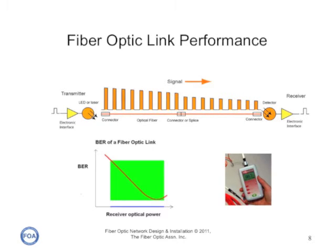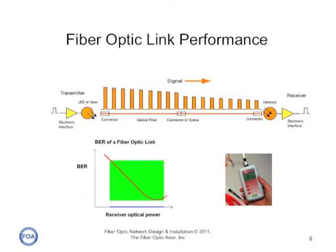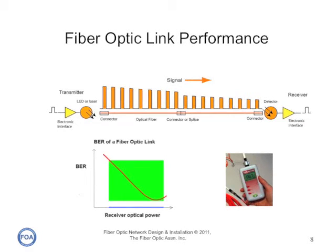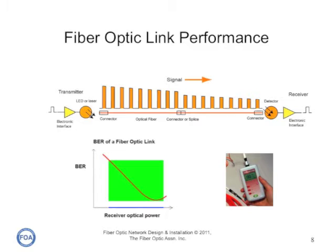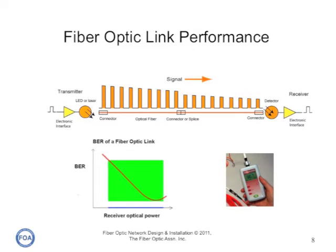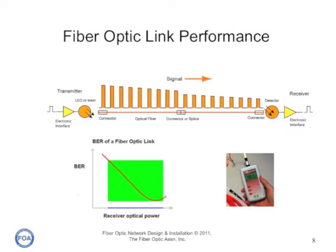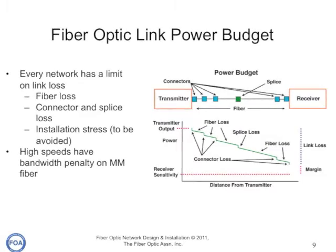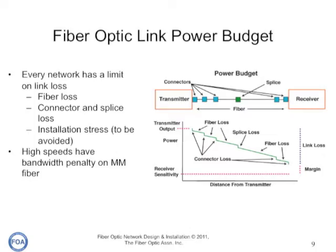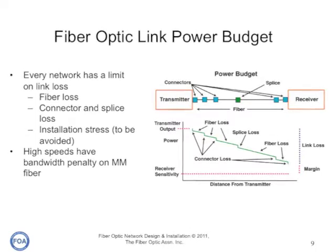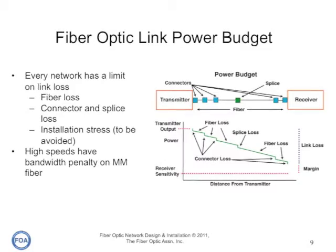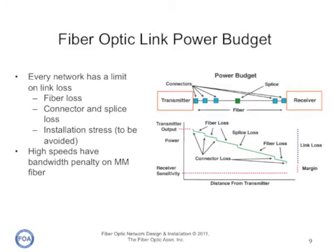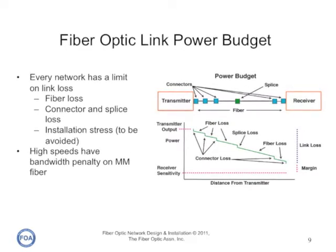For any given link, the performance of a data link is going to be determined by its bit error rate, or the number of bits received in error, and that is a function of received optical power. It must have enough power for an adequate signal-to-noise ratio, but not so much power that the receiver is overloaded. For each network, we know how much loss it can sustain over a link, so we calculate the projected loss of our cable plant and compare it to the dynamic range of the link itself. That way we know if we have an adequate amount of power when we get to the receiver. We call this a link power budget, and we do it for every network we design.